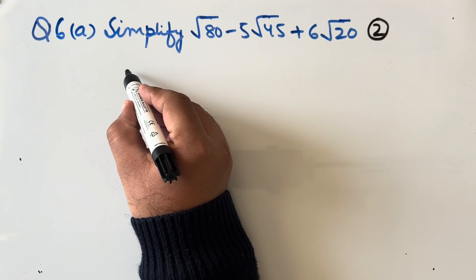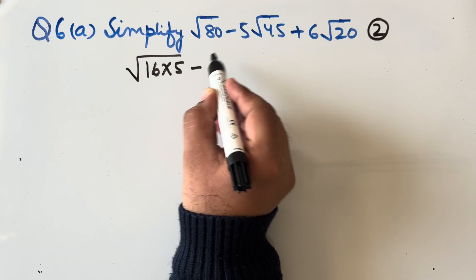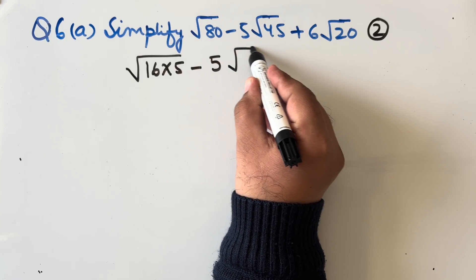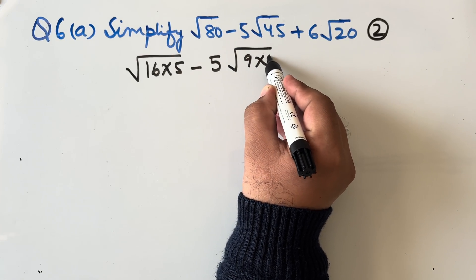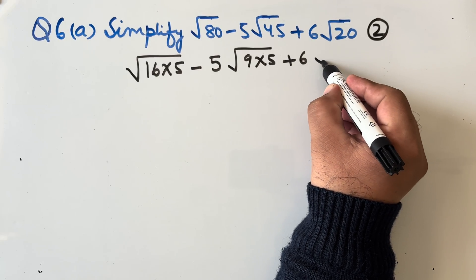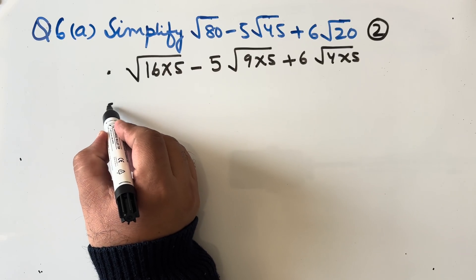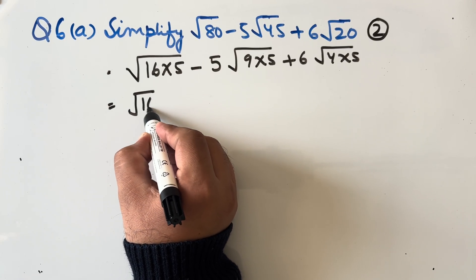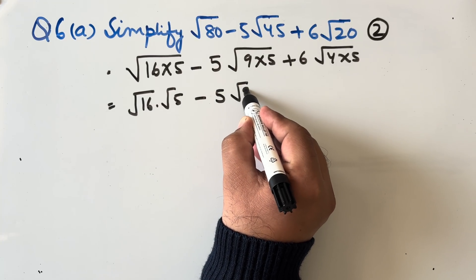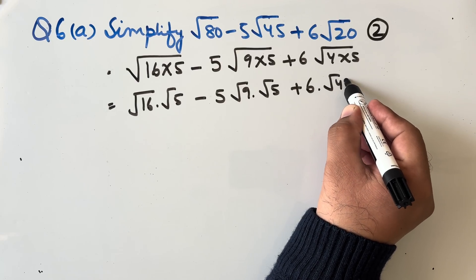√80 can be written as √(16 × 5). Minus 5 as it is. 45 can be written as √(9 × 5), plus 6√20 can be written as √(4 × 5). This can be written further as √16 × √5 − 5 × √9 × √5 + 6 × √4 × √5.